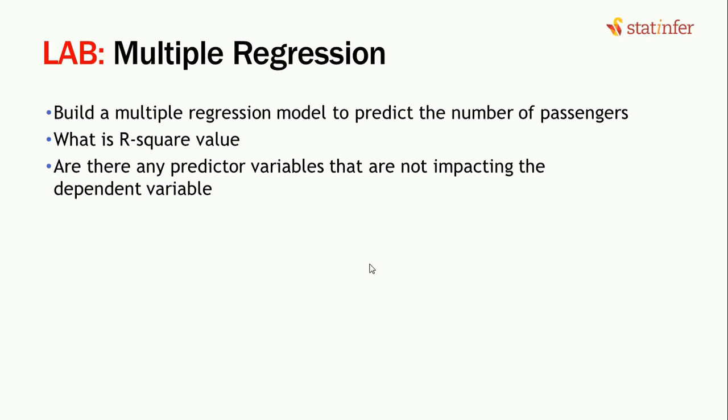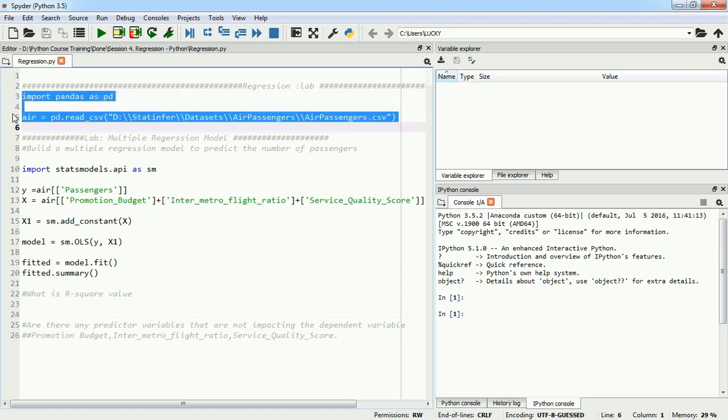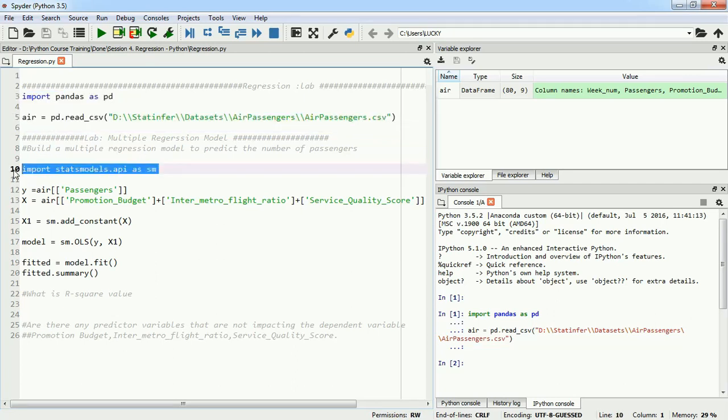So in our next part, we will try to build a model using more than one variable and we will try to find the r-square value. And if there are any variables which are not impacting, looking at the p-value, we will remove those variables and see if they cause any change in our r-square value. So let's get into my Python environment and start building a multiple regression model. I will import my dataset using pandas library. Now that I have imported my dataset, I will import my statsmodels API, which will allow me to build my linear regression model.